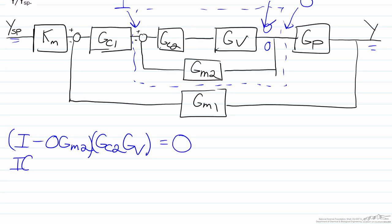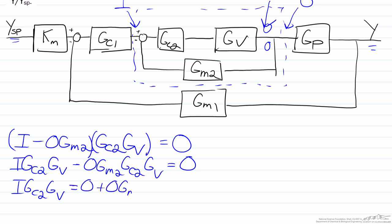So then we would have I Gc2 Gv minus O Gm2 Gc2 Gv equals O. We would then move the O term over to the right hand side, so this will leave us with I Gc2 Gv equals O plus O Gm2 Gc2 Gv.